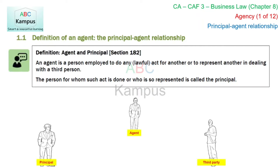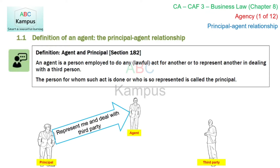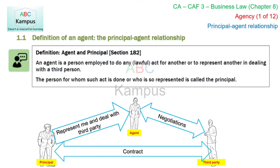There are basically three persons in the equation: the first person is the Principal, the second is the Agent, and the third is the Third Party. We want to understand the relationship between principal and agent through this chapter. The principal tells the agent to deal with the third party on behalf of the principal — the agent's job is to negotiate, and the contract is formed between the principal and the third party.